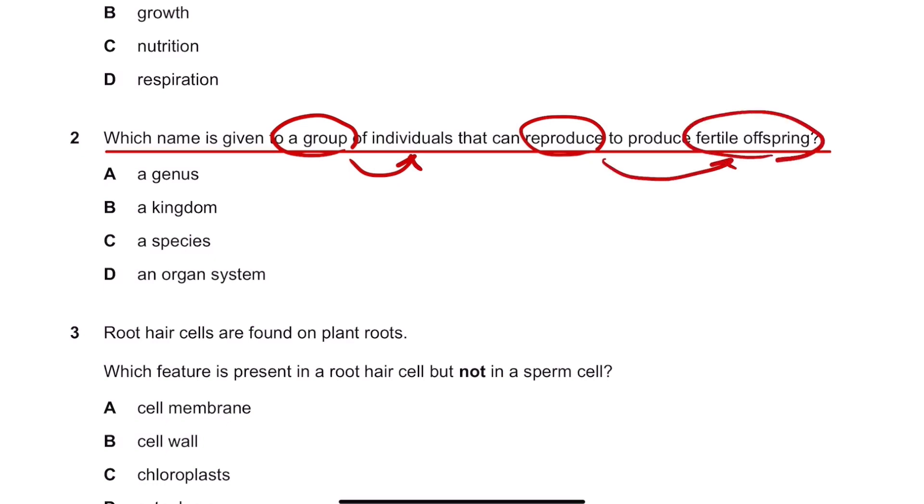By looking at it, the answer should be C, because species are, the definition of the species is a group of individuals that can interbreed, so they can mate together to produce fertile offspring.